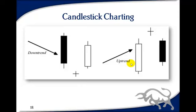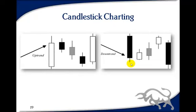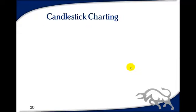The rising three pattern shows an uptrend where the market takes a break with three short-bodied bearish candles, none of which go below the body of the first candlestick. Then the fifth candle opens higher than the previous day and closes higher than the first day — those are the criteria for the rising three. The falling three has the same idea in reverse. There are actually a hundred named candlestick patterns in total, but these are the ones most commonly encountered.